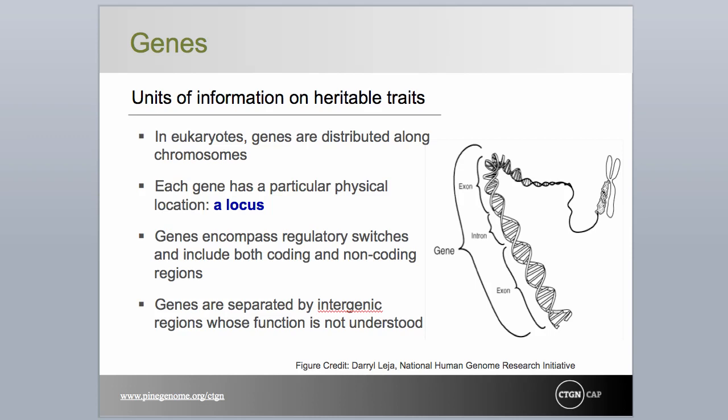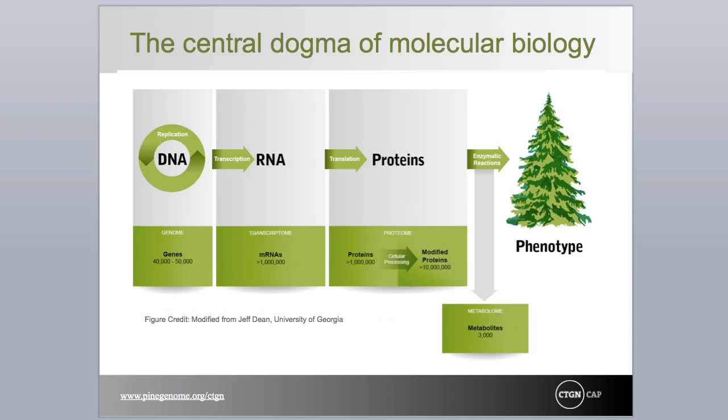But it wasn't until 1966 that the genetic code was cracked. Much has been learned about gene structure in the intervening years, spurred by Sanger's 1977 development of methods to sequence the order of nucleotides in stretches of DNA. Much of what we know and understand about the relationship between genes and physical expression of traits is based on the central dogma of molecular biology. The central dogma was first described by Francis Crick in 1958, though it required the cracking of the genetic code by Nirenberg and Khorana in 1966 to fully describe the process.